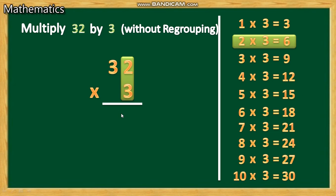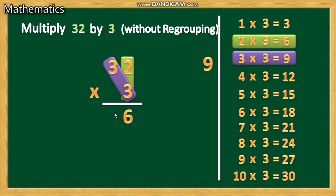Now we want to multiply 3 into 3. 3 threes are 9. Write that 9 just to the left side of this 6 — giving us 96. Finished! After getting the answer, you draw two lines.